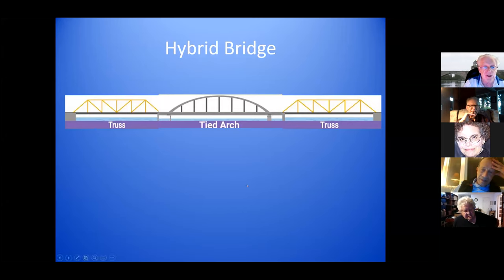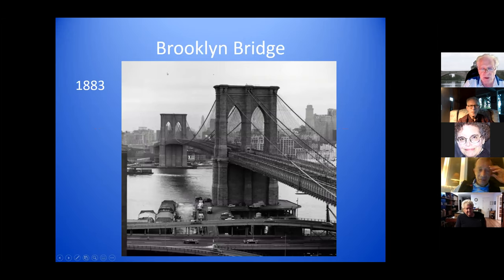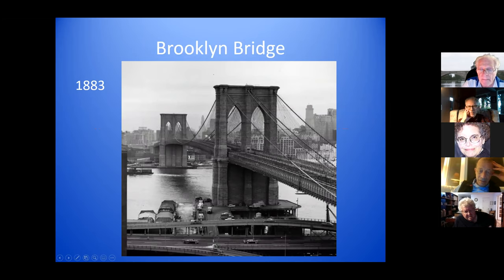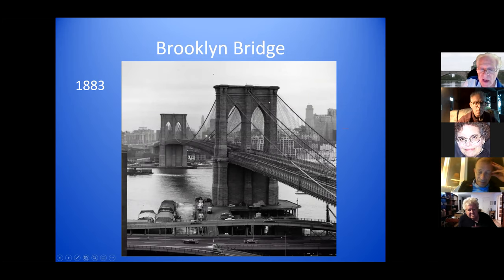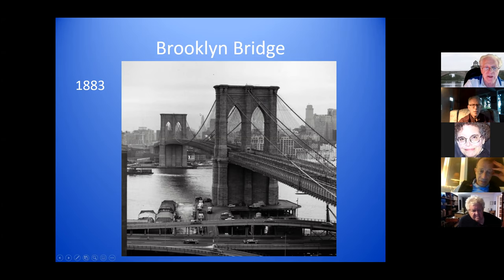Here's a hybrid bridge with three sections — two truss sections and a center section that is the tied arch, with ties coming down from the arch to support the roadway. Here's a nice picture of the Brooklyn Bridge, where you can see the suspension cables coming down to the roadway in the center span, and here you can see the cable ties all attached near the top of the tower. It is looking from Manhattan to Brooklyn.